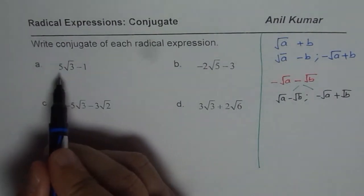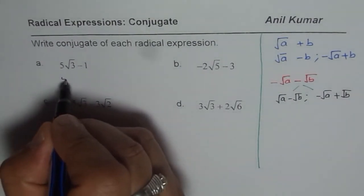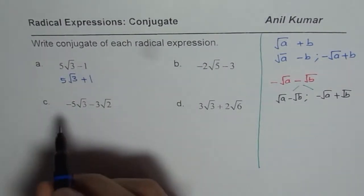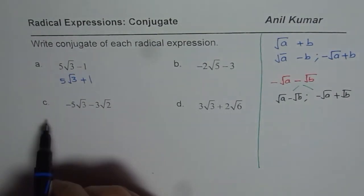So first one is 5√3 - 1. So we could write this as 5√3 + 1. When that is a choice we will prefer to write that number. It looks better.